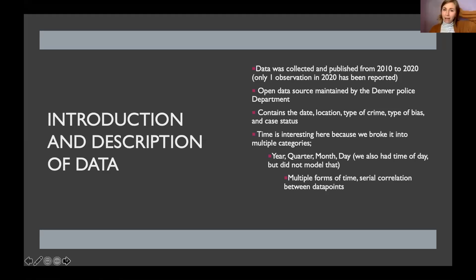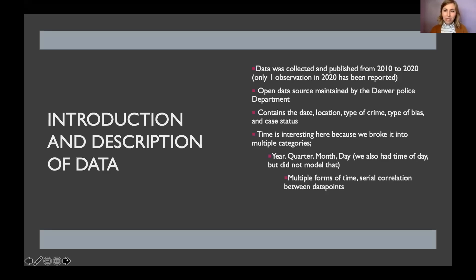The data was collected and published from 2010 to 2020, but at the time I accessed it, only one 2020 observation had been reported — not that only one crime occurred, but it was the only one recorded. It's an open source database provided by the Denver Police Department containing the date, location within Denver, type of crime, type of bias motivating the crime, and case status. Time is particularly interesting here because it's broken into multiple categories: year, quarter, month, and day — though I didn't model time of day.